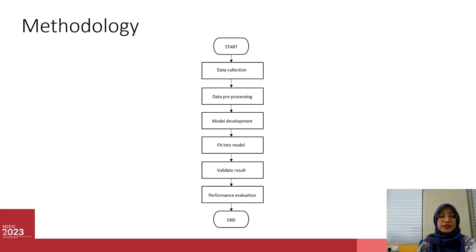For methodology, the whole framework of this research is illustrated in this paper. This research started with data collection and data pre-processing. The bankruptcy data is collected from year 2000 until 2021, where the data taken is five years before the company is detected as bankrupt. The pre-processing steps are data cleaning, data discretization, and attribute reduction. For attribute reduction, we use nine sets of attribute reduction with three types of search methods.